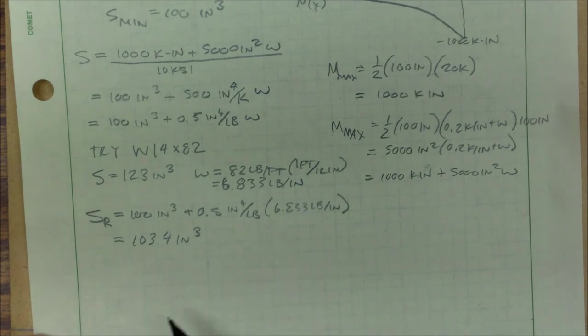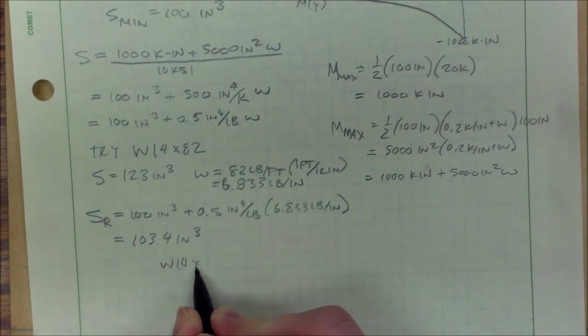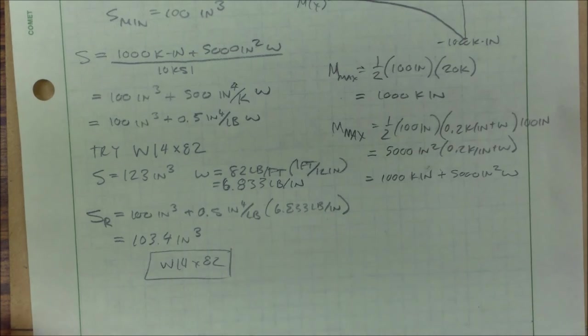So this is our required section modulus, and we have 123 inches cubed for this particular beam. This is bigger, which means that we're okay. We're greater than required. But that's the best beam for this particular fit, this particular situation. So my answer would be the W14 by 82. And that's it.